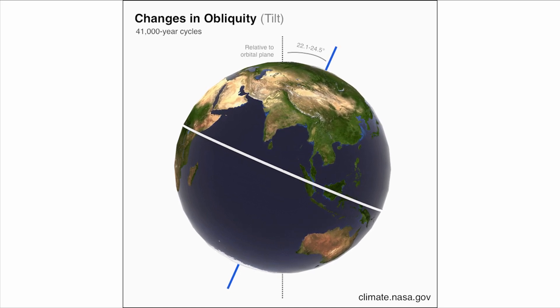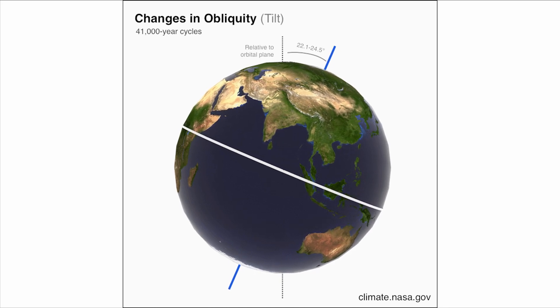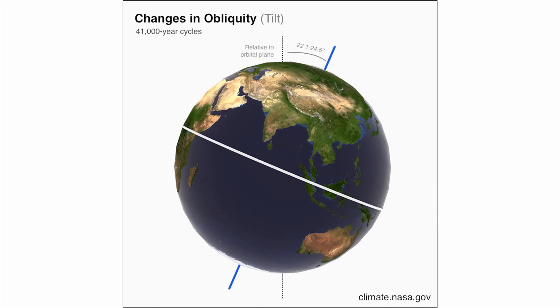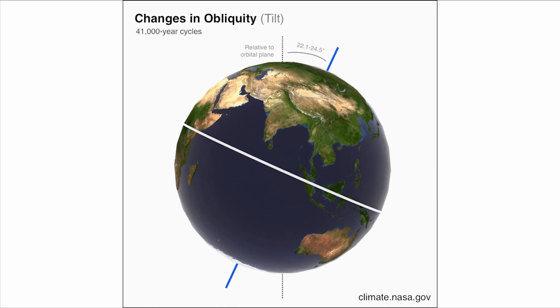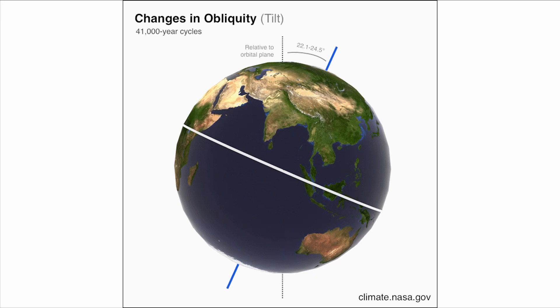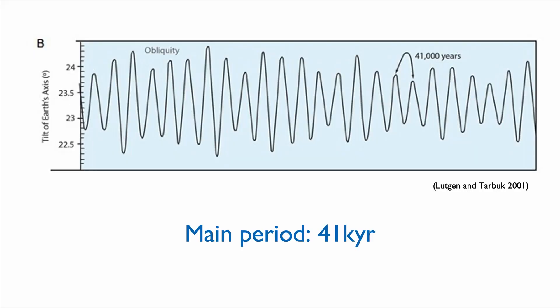The next important Milankovitch parameter is obliquity, or the tilt of the Earth's axis. As you know, the Earth's axis is tilted with respect to the plane of the solar system, and that tilt varies over time between 22.1 and 24.5 degrees. How tilted the Earth's axis is has tremendous implications for how much energy the poles receive, which affects the ability to sustain ice caps, and thus sea level and climate. Obliquity has a main frequency of 41,000 years.